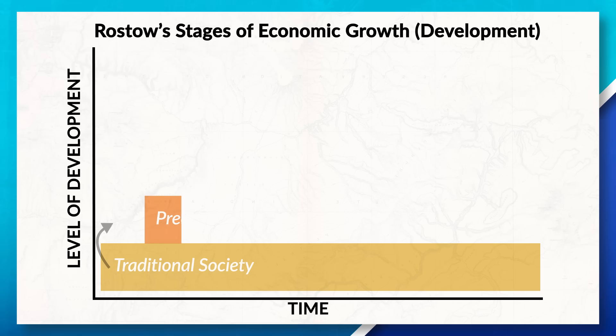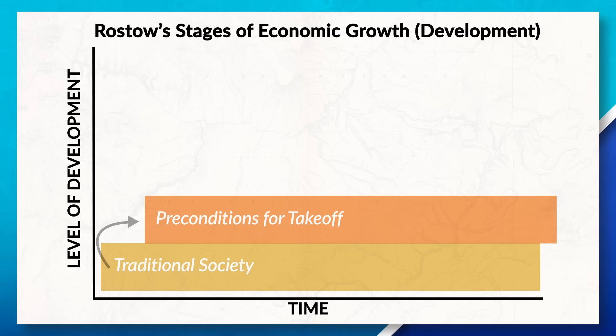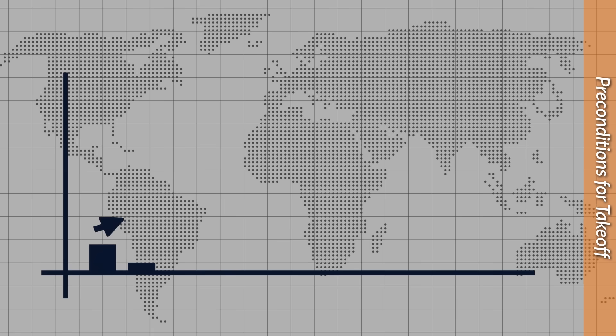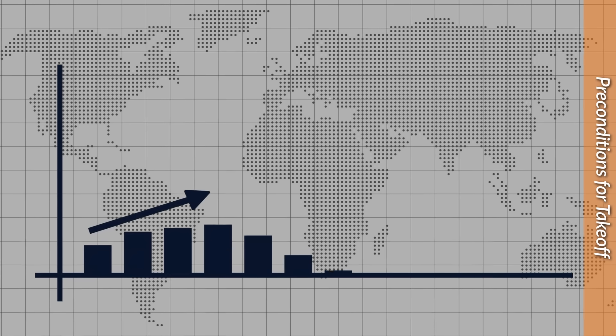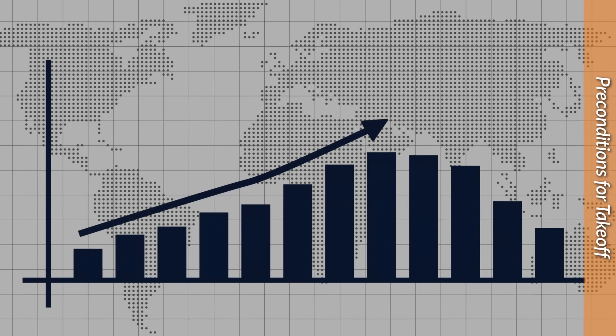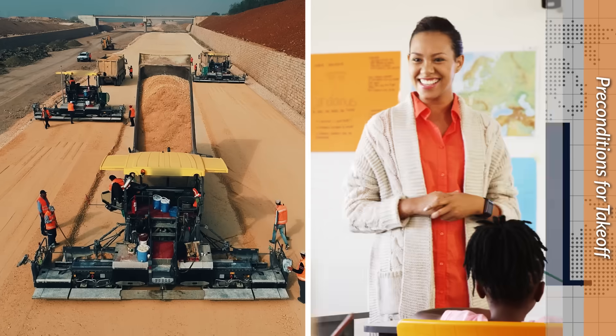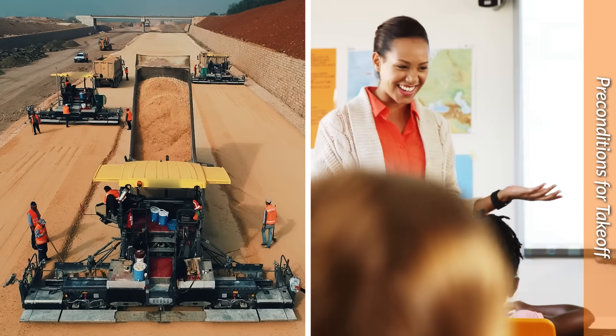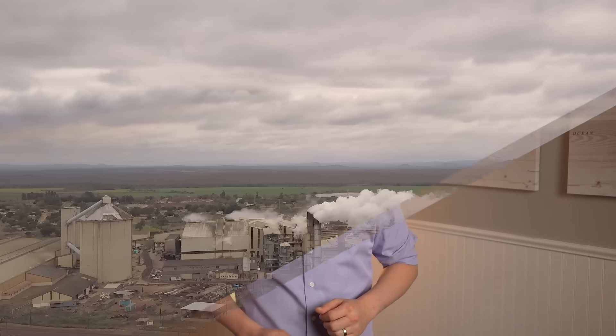The second stage of the model is preconditions for takeoff. During this stage, the economy begins to grow due to more investment in infrastructure and education. As time goes on, productivity starts to increase as new industries start to emerge.